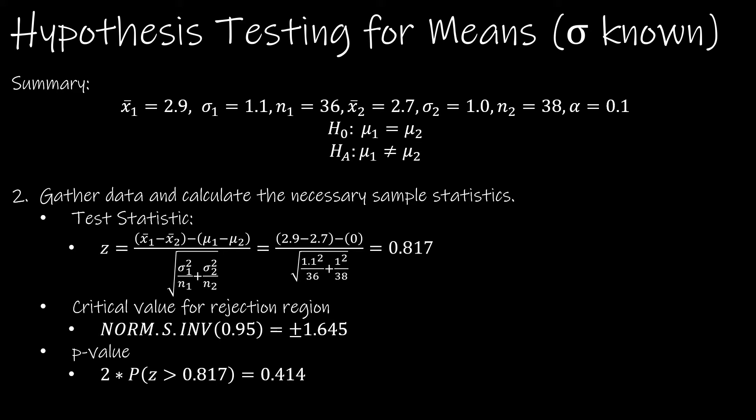Now let's do the math. So the test statistic is just subtracting the means and then minus the hypothesized difference, in this case is 0, and then divided by the square root of each standard deviation squared divided by n. And I end up with 0.817.